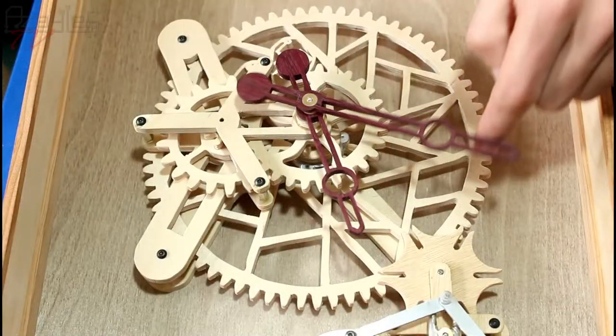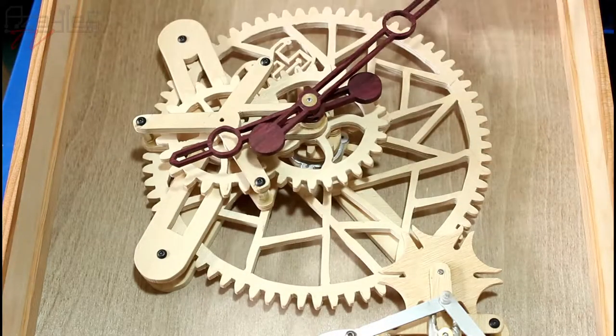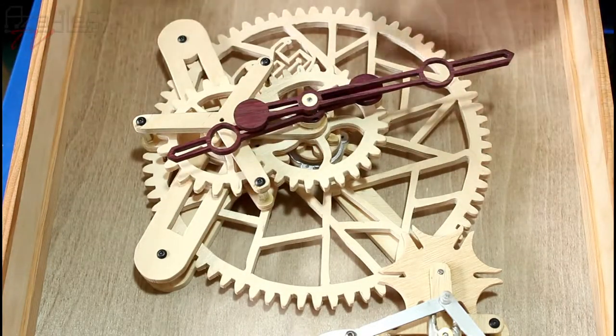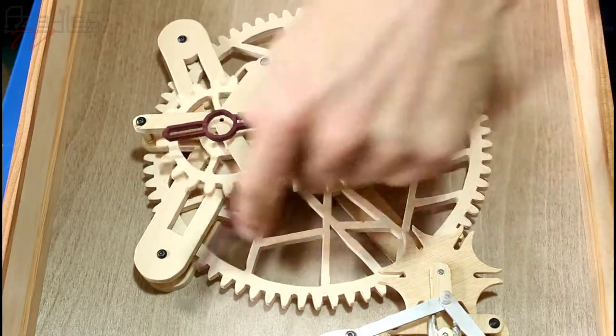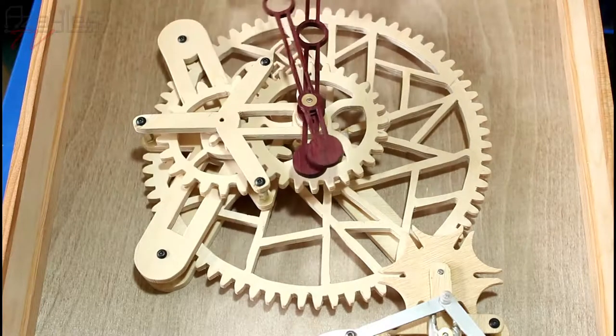So let's stick these in the clock and get it running. Well, that's the hands in place. They fit very nice and nothing's binding up. The hands are clear of each other. There's a nice gap of about 2 or 3mm between both of them.